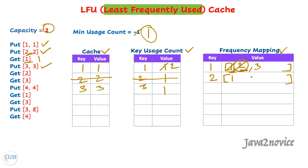The next action is a get call — since key two does not exist in the cache, simply return minus one. The following action is another get call — key three exists in the cache, so return the value. Before returning the value, update counts: increment key three's count to two, and move key three from the count-one list to the count-two list.